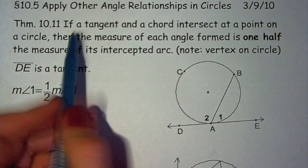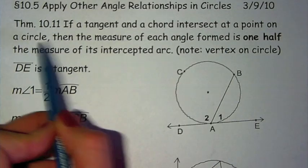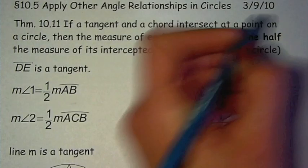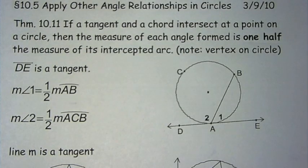Theorem 10.11: If a tangent and a chord intersect at a point on the circle, then the measure of each angle formed is one-half the measure of the intercepted arc. Make sure that the vertex is on the circle and that the line is tangent to the circle.